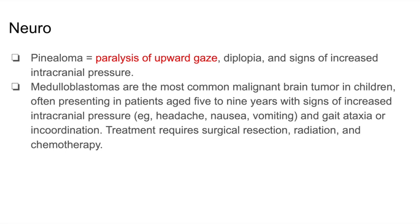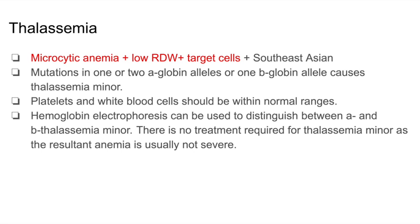Examiners love to test hematology concepts using up-down arrows, and this applies to all USMLE exams: Step 1, Step 2, and Step 3. If you see lab reports showing a patient with macrocytic anemia, a low red blood cell distribution width, and target cells, and they're Southeast Asian, you need to think about thalassemia. Thalassemia occurs due to mutations in 1 or 2 alpha-globin alleles or 1 beta-globin allele, and can result in thalassemia minor. You'll also typically see normal platelets and white blood cells.